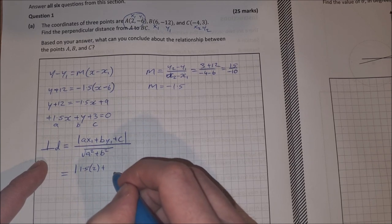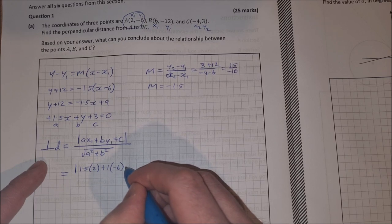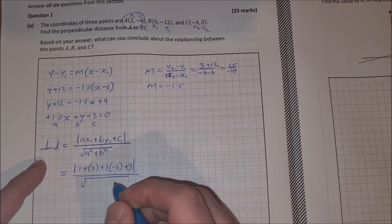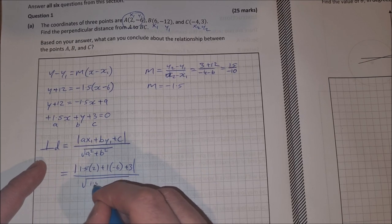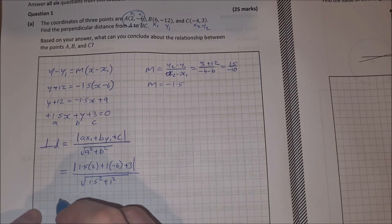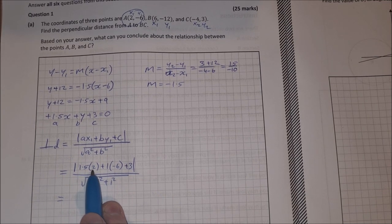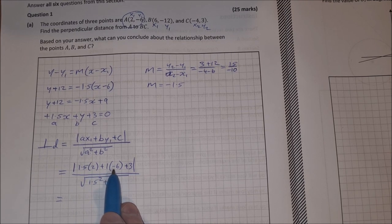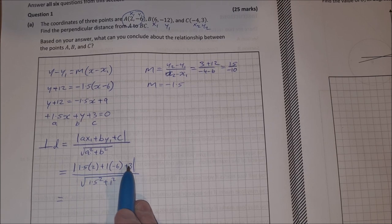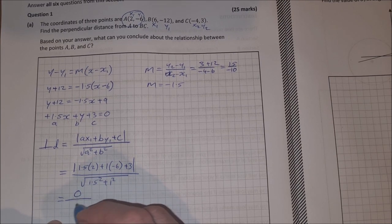Let's fill everything in. We get the absolute value of ax1, so that's going to be 1.5 by 2, plus by1, so that's plus 1 times -6, plus c, and c was 3, all over the square root of a squared plus b squared, that's 1.5 squared plus 1 squared. Let's tidy this up a bit, so on the top I get 1.5 times 2, that's 3, 1 by -6 is -6, and then 3, so if 3 plus 3 is 6 minus 6 is 0.